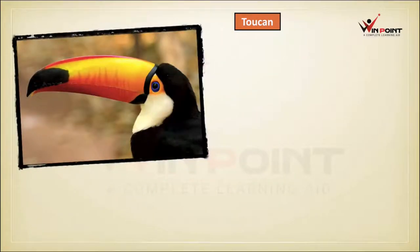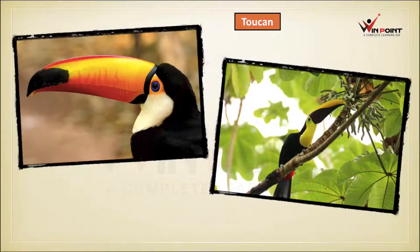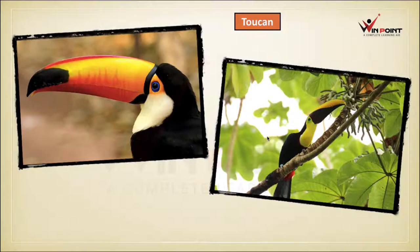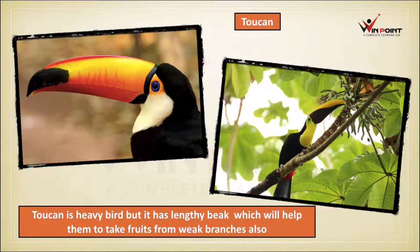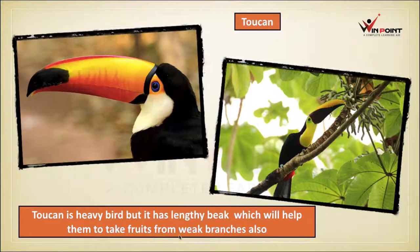Toucan is a bird. It is a heavy bird, but because of its large beak, it can take fruits from the light branches also. Toucan has a lengthy beak which will help it to take fruits from weak branches as well.